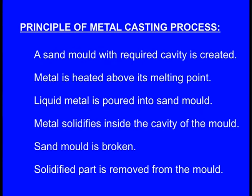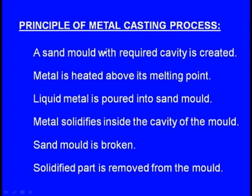The principle of metal casting: a sand mould with a required cavity is created first, using a wax model or sometimes a wooden model. After creating the cavity, the metal is heated above its melting point and liquid metal is poured into the sand mould. The metal solidifies inside the cavity, and after some time the sand mould is broken and the solidified part is removed. This is the simple principle of metal casting.